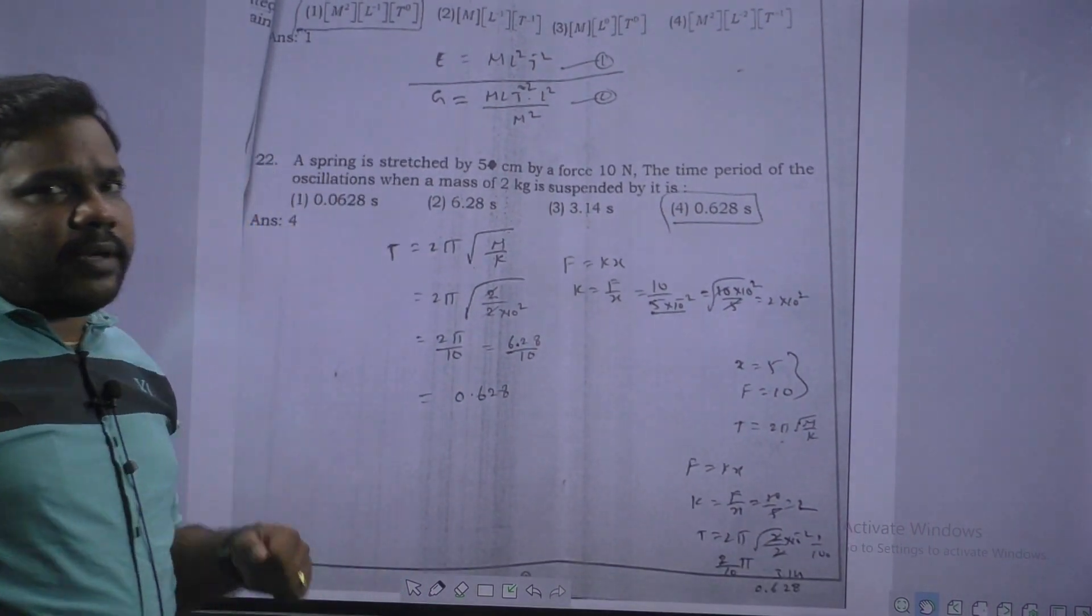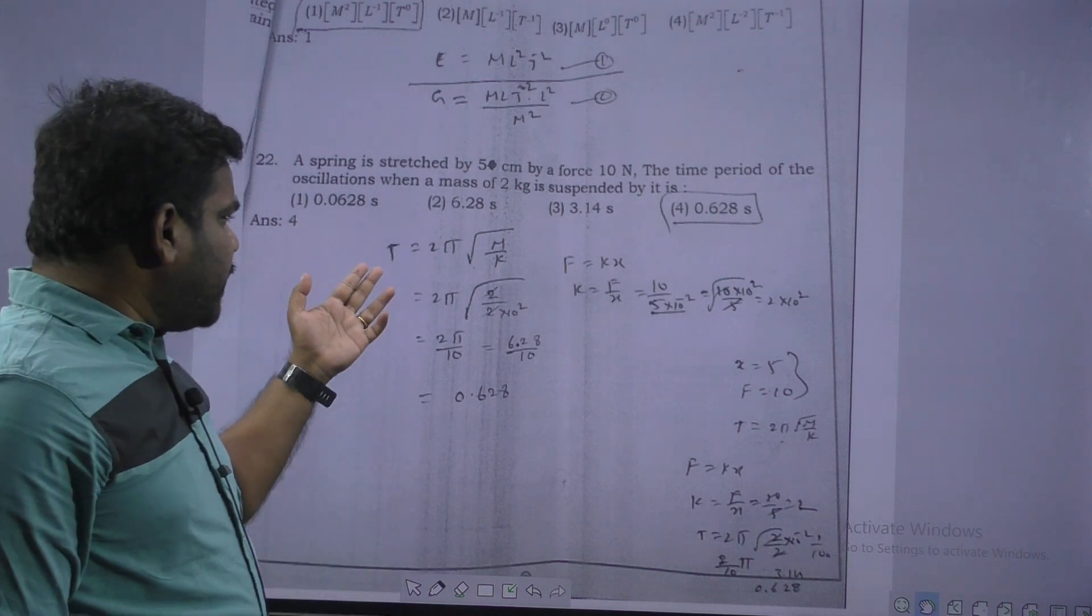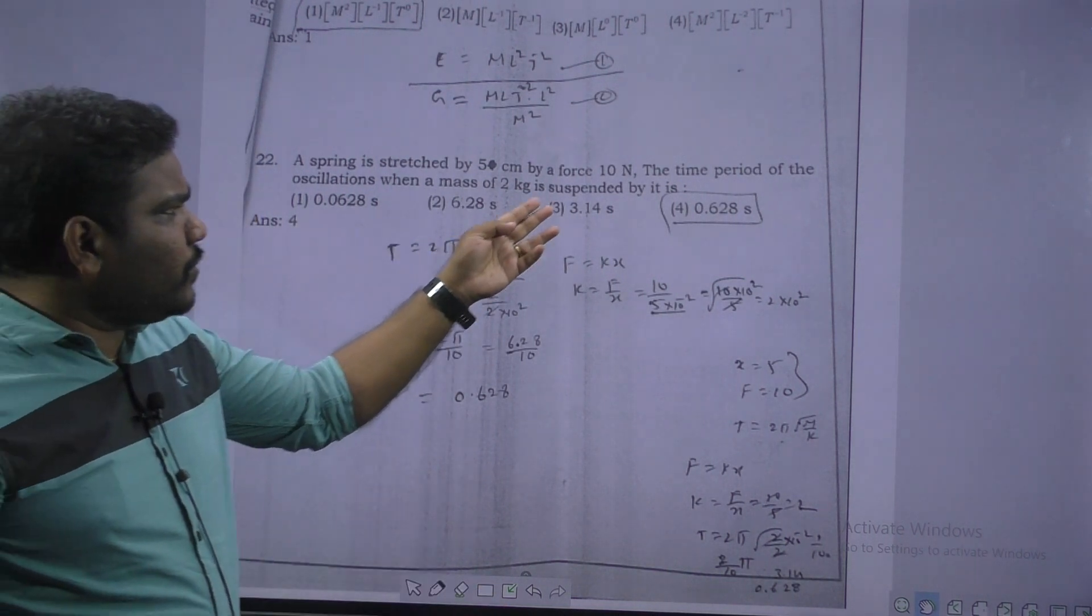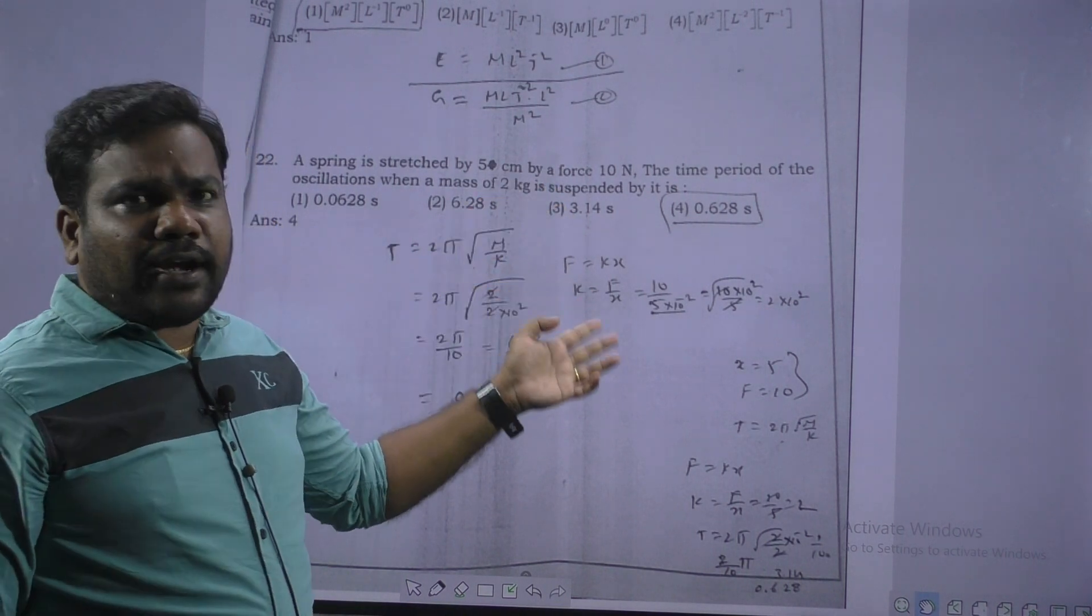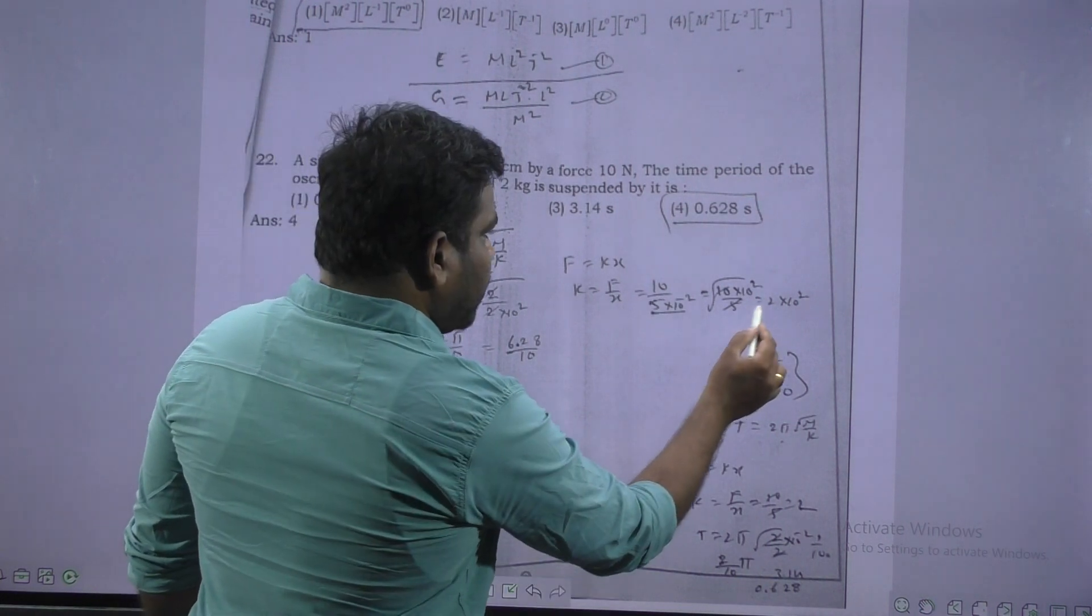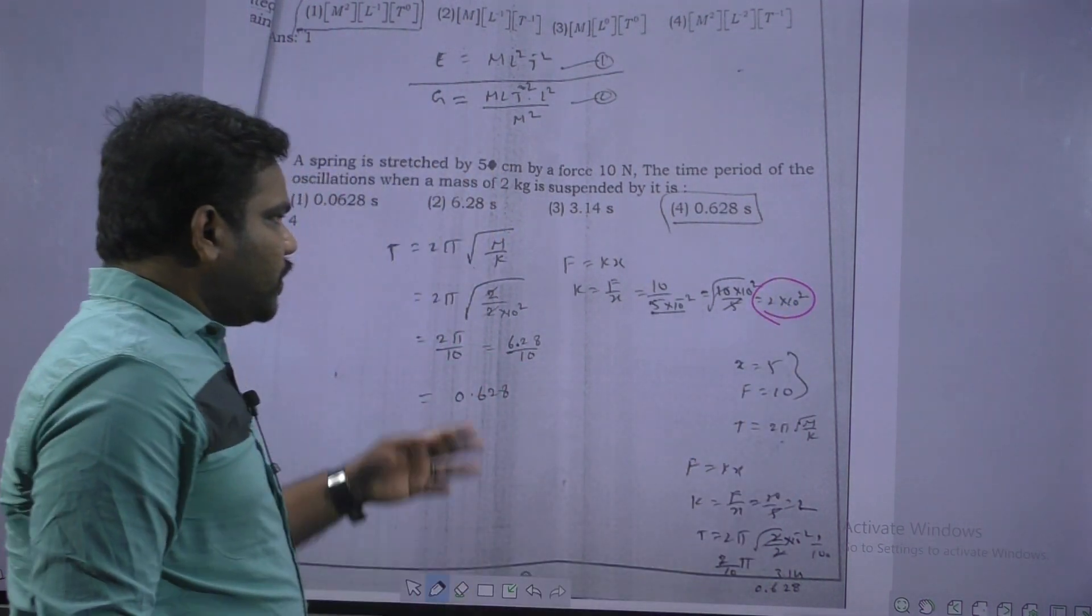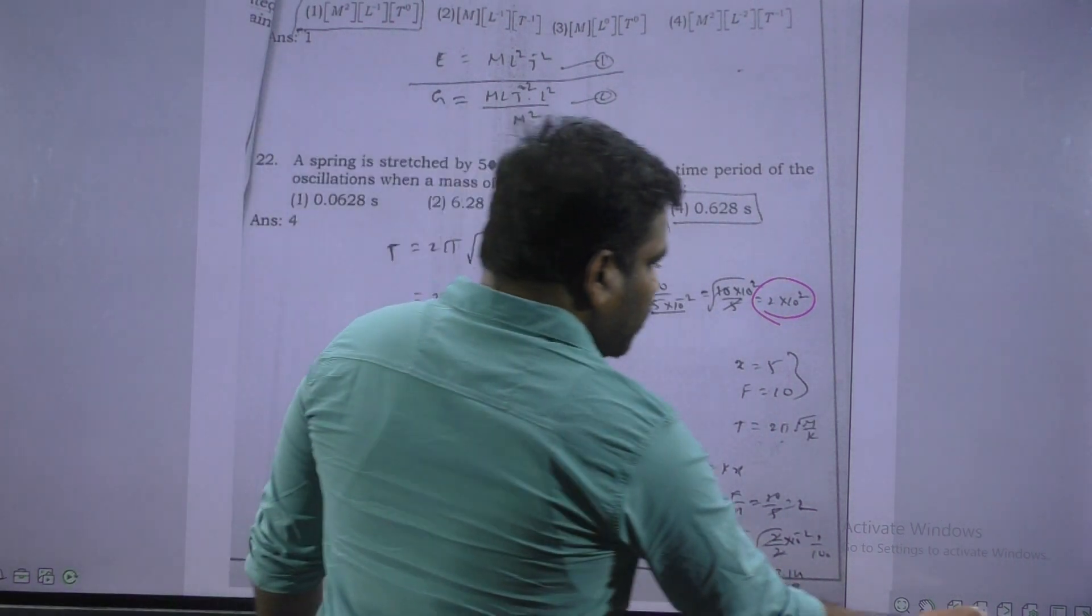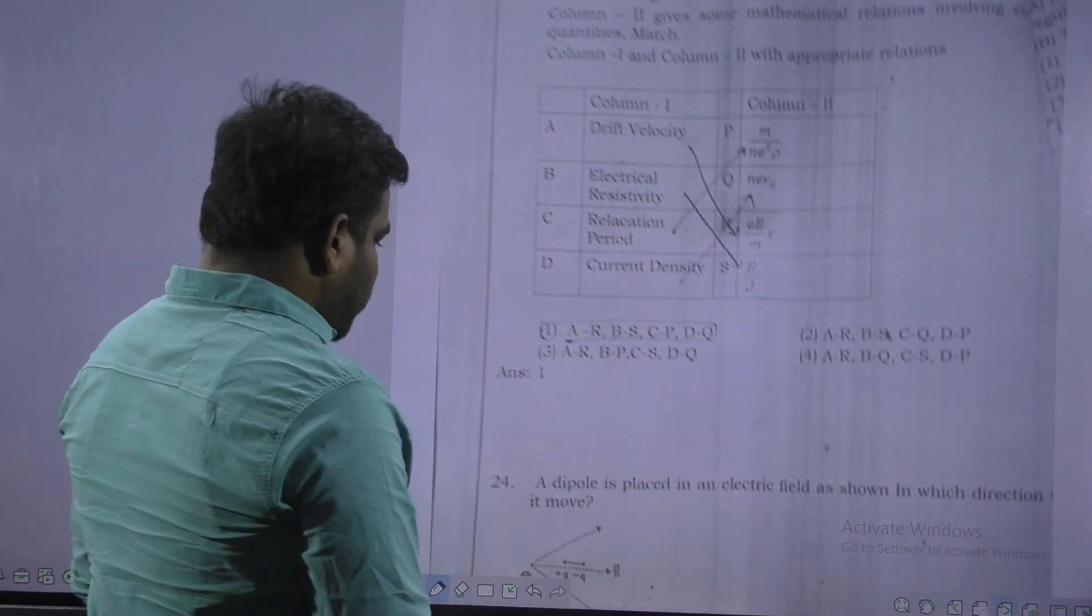Next. Time period of spring pendulum is asked, that is T is equal to 2 pi root over m by K. Mass is given 2 kg, and K should calculate from force law. F is equal to Kx, from that K should calculate. After substitution, we get 0.628.